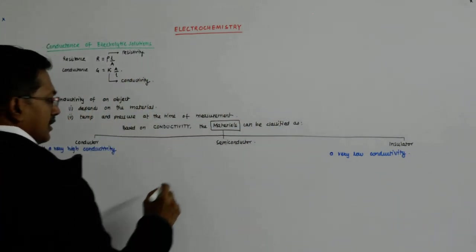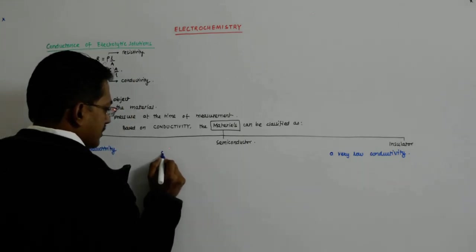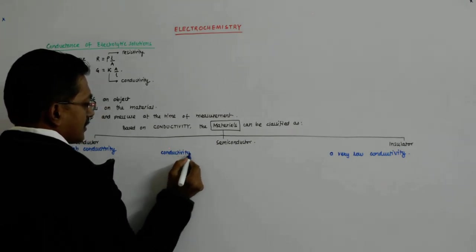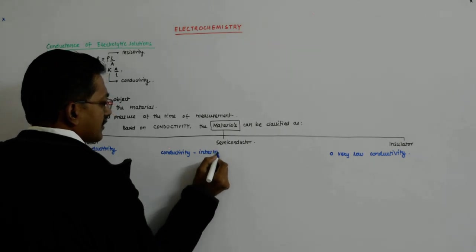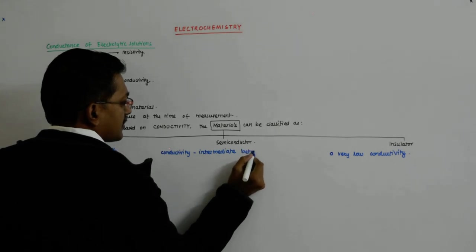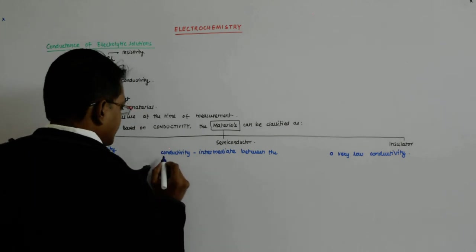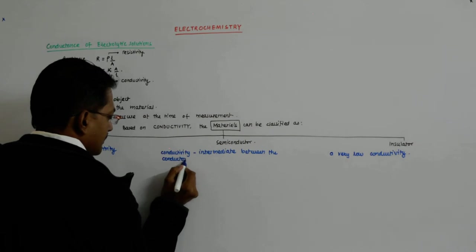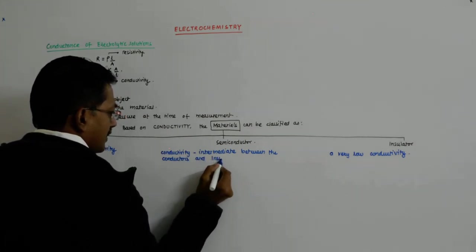While a semiconductor has the conductivity intermediate between, intermediate between the conductors and insulators.